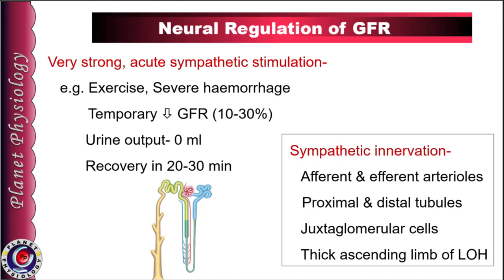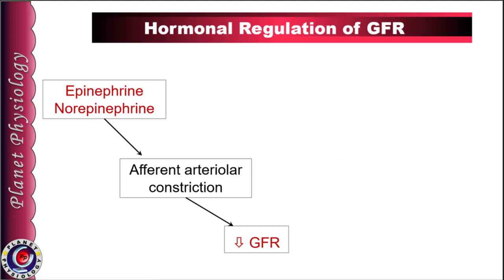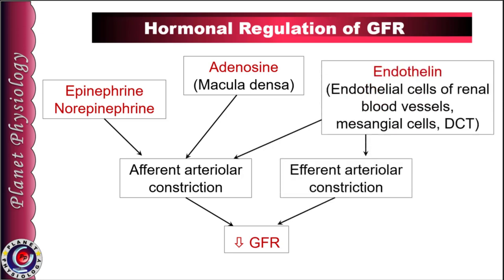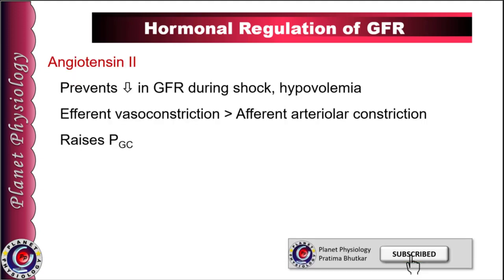Regarding hormonal regulation, circulating epinephrine, norepinephrine, and adenosine secreted from macula densa cause afferent arteriolar constriction and hence decrease GFR. Endothelin is secreted from endothelial cells of renal blood vessels, mesangial cells, and distal convoluted tubule; it causes constriction of both afferent and efferent arterioles, decreasing GFR. Angiotensin II predominantly causes efferent arteriolar constriction and raises glomerular capillary hydrostatic pressure, thereby increasing GFR. It is formed in response to hypovolemia or decreased blood pressure to prevent a falling GFR and maintain excretion of metabolic waste products.